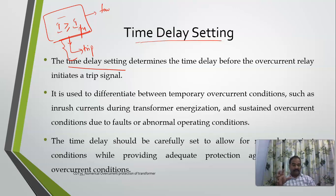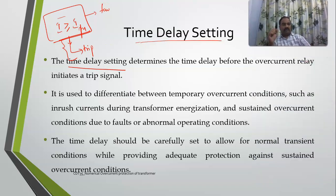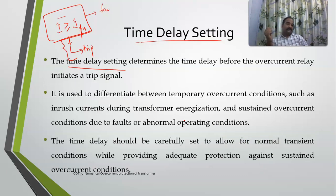During transformer energization there might be huge inrush currents lasting only a few microseconds, or transients due to lightning, which may not need to be treated as overcurrent conditions. So the relay waits and watches. The time delay setting must allow for normal transient conditions while ensuring adequate protection is provided for sustained overcurrent conditions. If the fault is sustained, proper action should be taken; if it lasts only a few milliseconds or microseconds, the relay need not operate. Time delay setting must be carefully chosen.